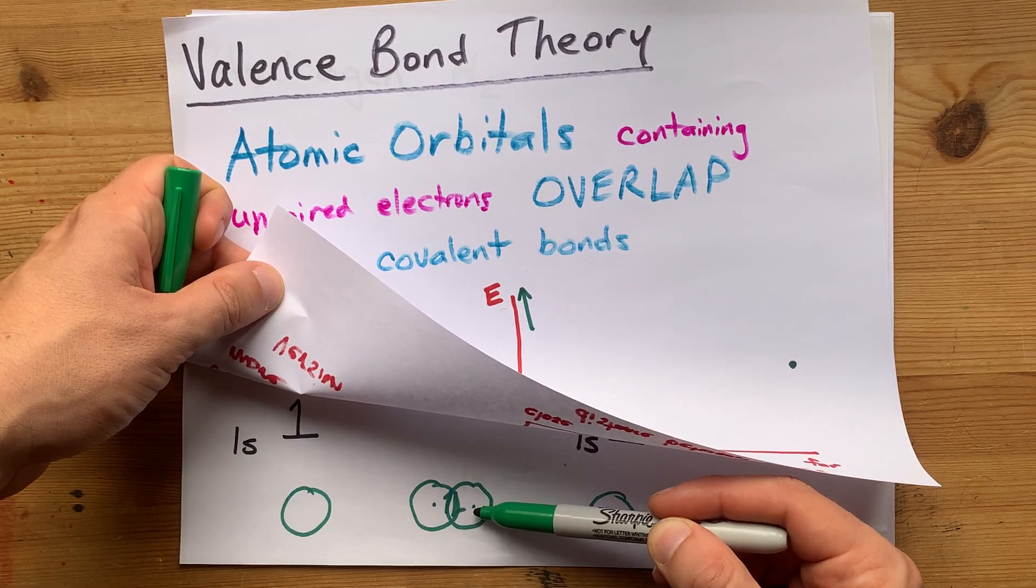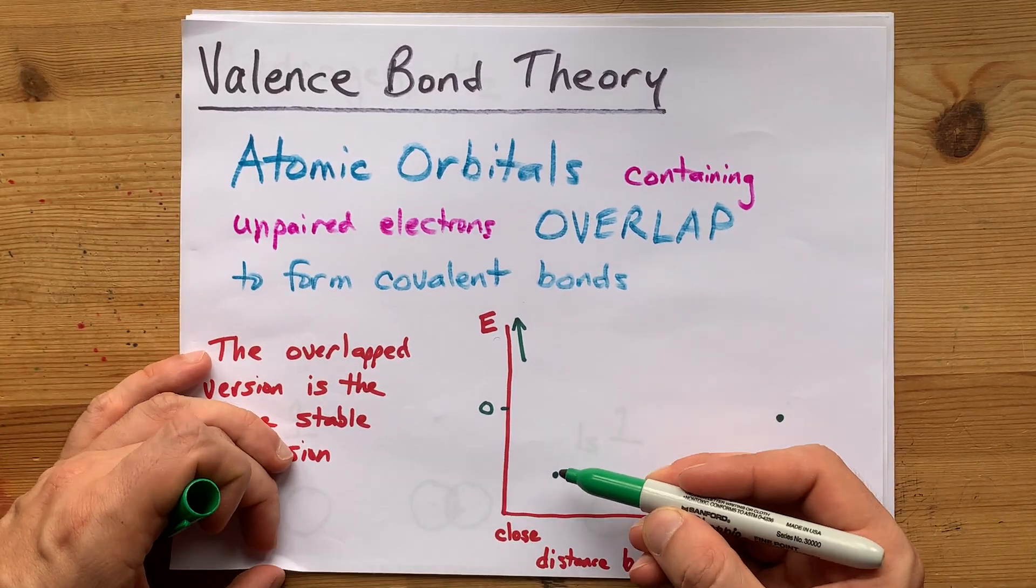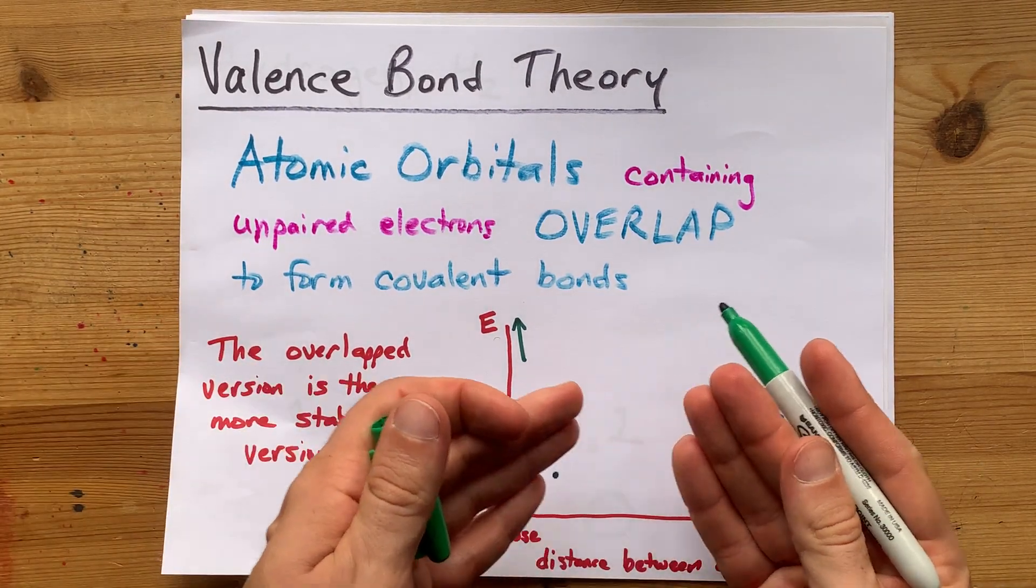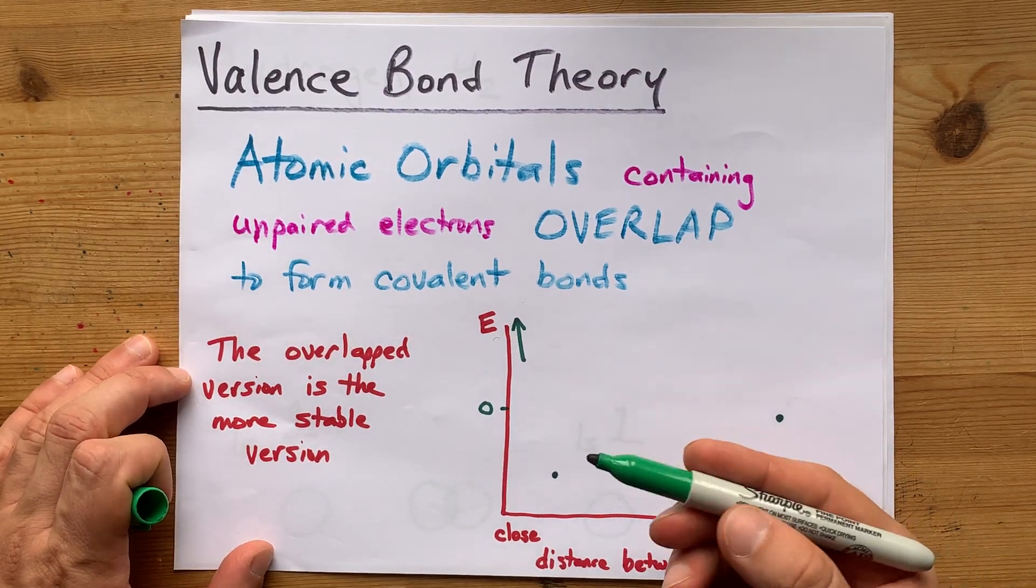And therefore, they're attracted towards each other. There's a magic radius or bond length where that is most stable.